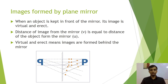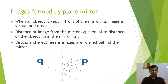Now we come to our next topic: image formed by a plane mirror. When we stand in front of a plane mirror, our image is formed in the mirror. The object distance and the image distance will always be equal. Second, the image formed by a plane mirror is always virtual and erect, meaning the image is formed behind the mirror. As you can see in the figure, object P is kept in front of the mirror and its image forms behind the mirror at an equal distance.